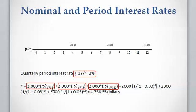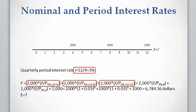Then we calculate the present value of these payments. The first payment is at the end of the first year, which is the fourth quarter, with 3% interest per quarter. The second payment is in the eighth quarter with a 3% interest rate per quarter. The third $2,000 is in the twelfth quarter with 3% interest rate, and the result shows the present value of these three payments.